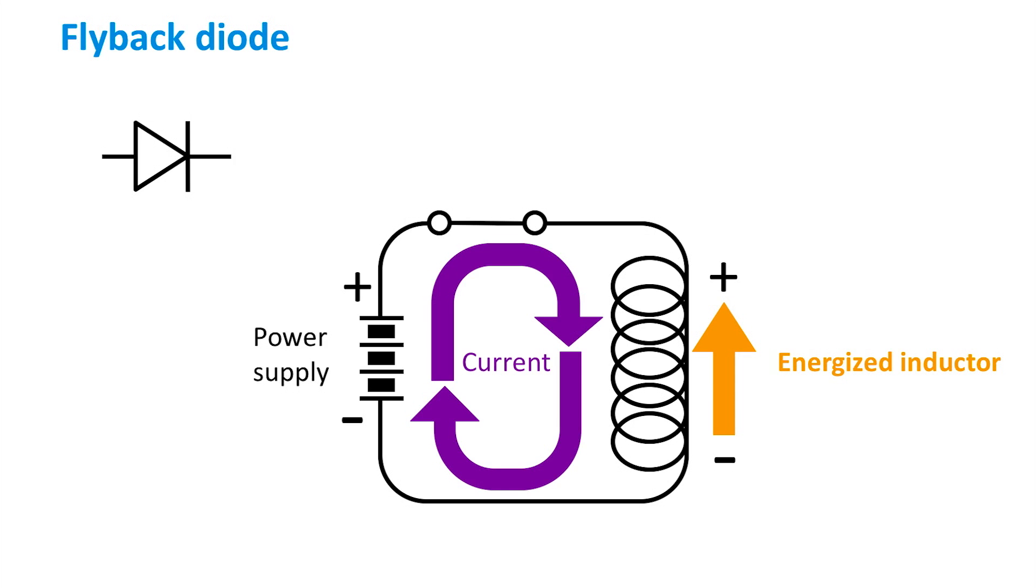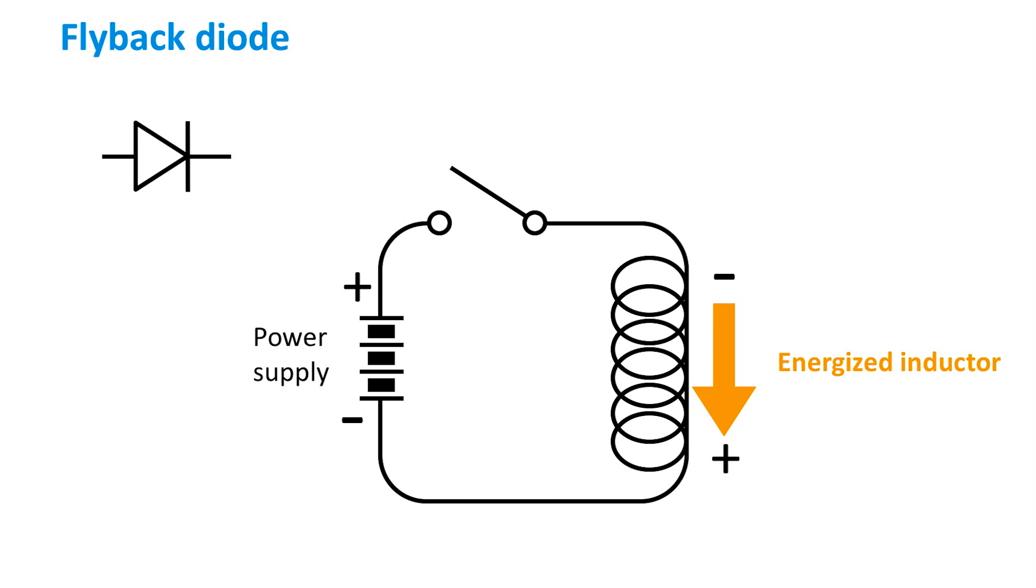However, in the moment that we open the switch, the inductor will attempt to resist the sudden drop of current by using its stored magnetic field energy to create its own voltage. Hence, an extremely large negative potential is created across the inductor and the voltage at the switch. Becomes the sum of the voltage of the power supply and the voltage of the inductor, generating a very large potential difference that can cause electrons to arc across the air gap of the open switch.